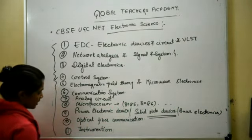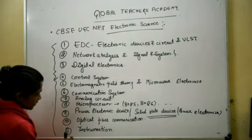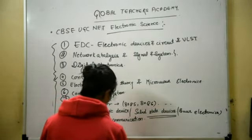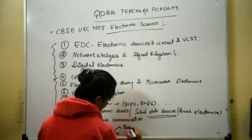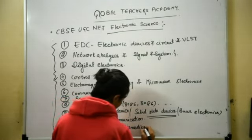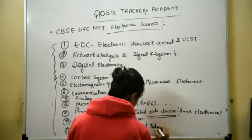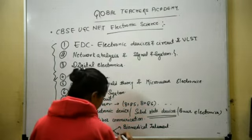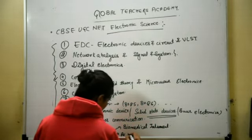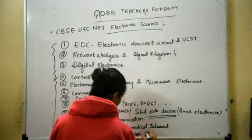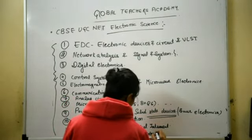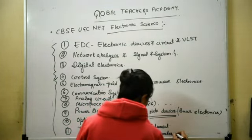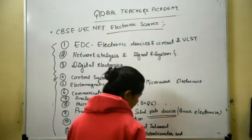The next unit is Optical Fiber Communication, and the last unit is Instrumentation. Instrumentation also consists of two parts. The first part is Biomedical Instrumentation. The next part consists of AC Bridges, Potentiometer, and some other topics, which I will discuss later.